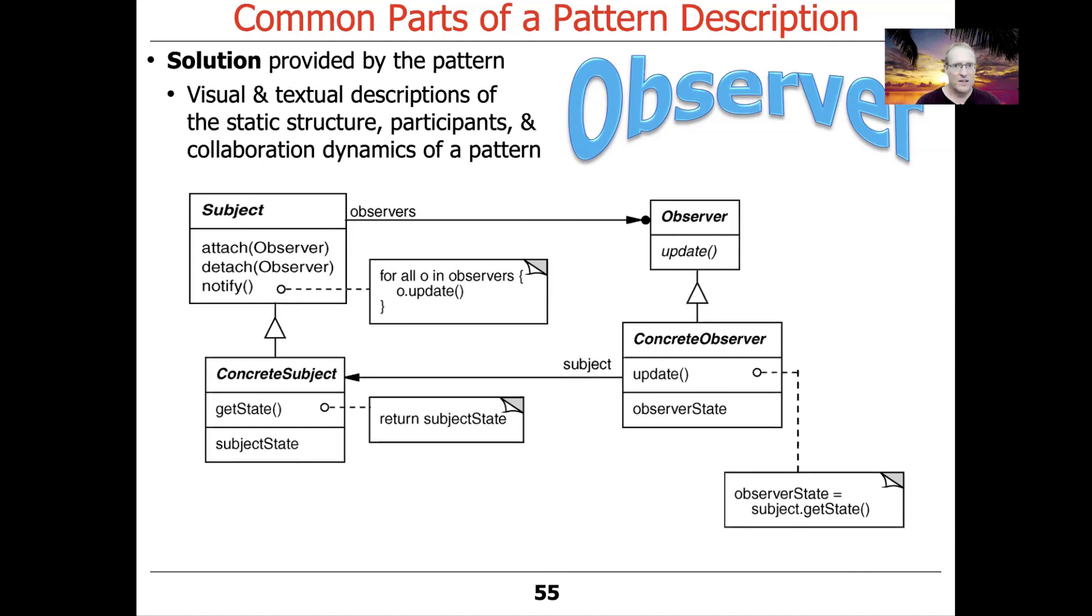Once you've described the problem and motivated the context in which it occurs, the next thing is the solution. This is typically provided in both visual and textual descriptions outlining the static structure, the participants, and the collaboration dynamics of canonical examples of applying the pattern. One of the key things to remember here is that you don't have to be completely beholden to this particular diagram in order to implement the pattern. This diagram illustrates a more detailed view of the observer pattern, where we have a subject with various methods like attach and detach to register and deregister observers. We have observers that have a notify method. We have concrete observers that inherit from observer and override the update hook method.